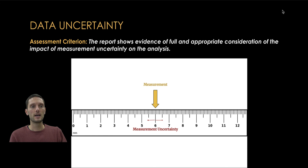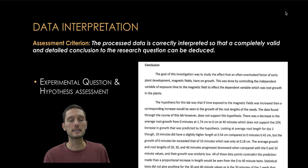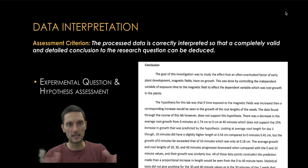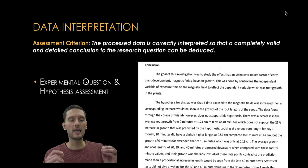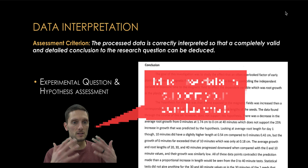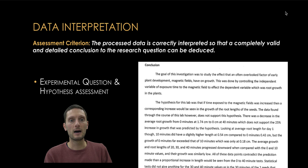The last component of the analysis criterion is data interpretation. The processed data should be correctly interpreted so that a completely valid and detailed conclusion to the research question can be deduced. This ties closely with the evaluation, where you pull together all of your analysis. You must actually include your data and analysis in the conclusion and evaluation to draw conclusions and answer the research question. It's critical to include that data to support whatever decisions you make about the hypothesis being supported or not supported.